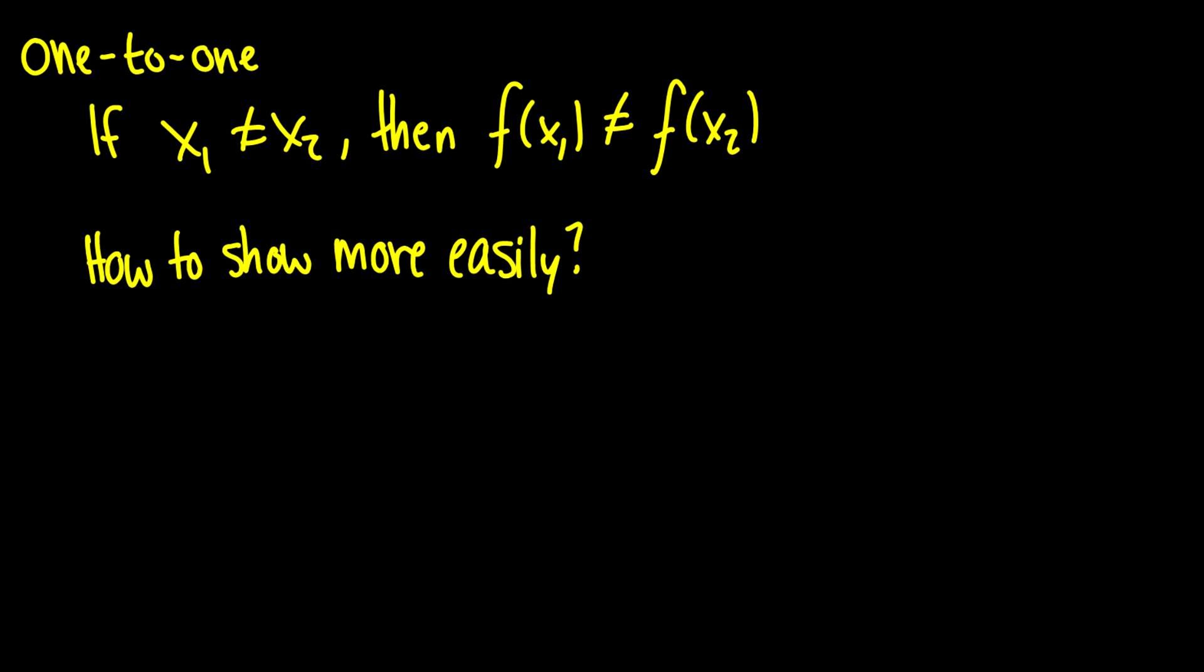What does it mean to be one-to-one? It means that if x1 is not equal to x2, then f(x1) is not equal to f(x2). Basically, if we have x1 and x2 in the domain with outputs y1 and y2, if x2 maps to y2, then x1 is never going to map to y2. You'll never have two elements in the domain that map to the same element in the codomain.